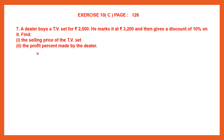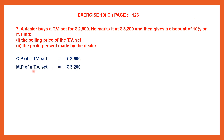First we have to find the selling price of the TV set, and secondly the profit percent made by the dealer. The cost price of the TV set is given to us, and the marked price is also given to us. Now we have to find the discount, which is 10% of the marked price — 10% of Rs. 3,200.